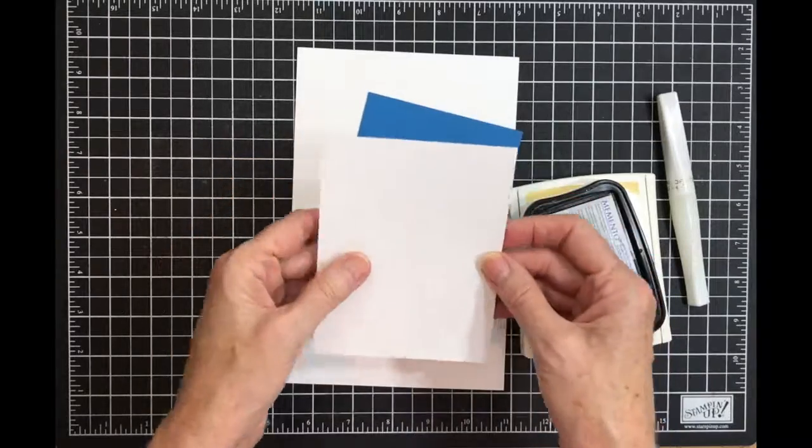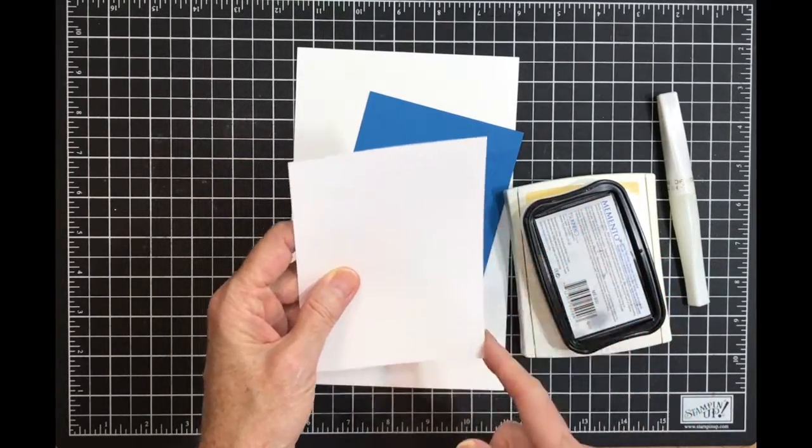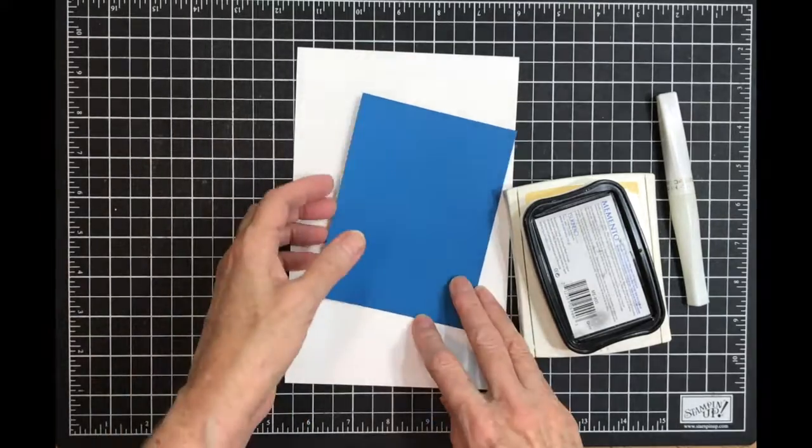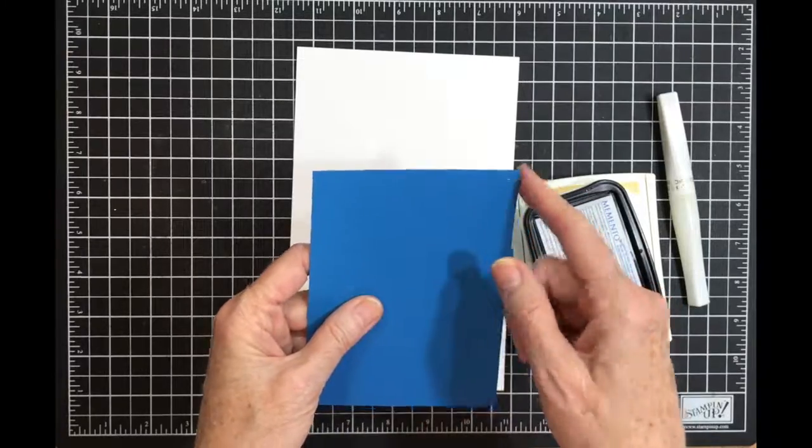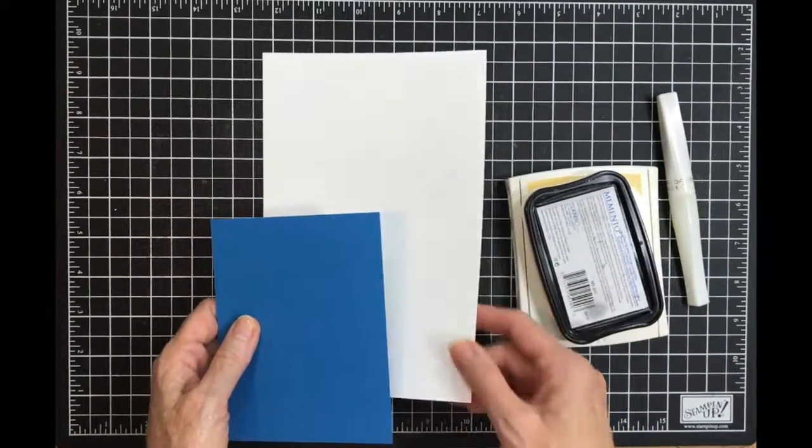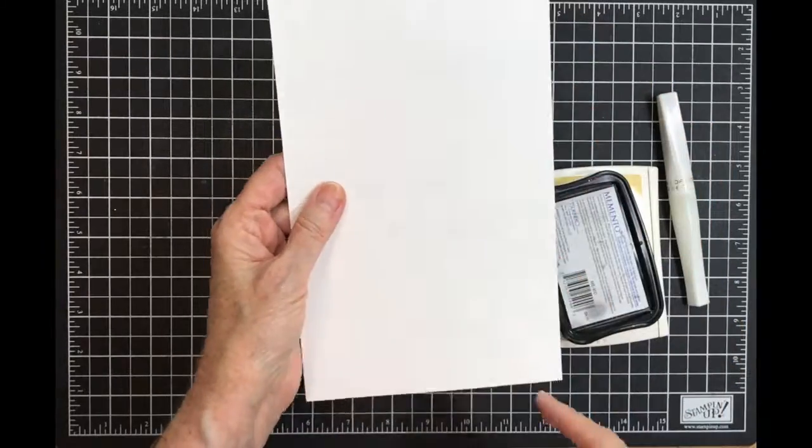A piece of Pacific Point that's four by five and a fourth. My card base which is five and a half by eight and a half, scored at four and a fourth.